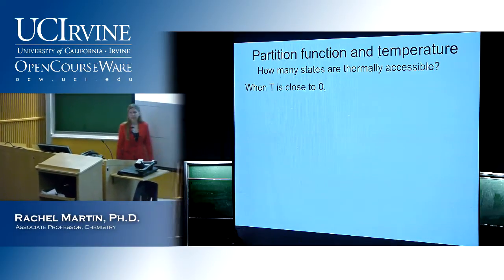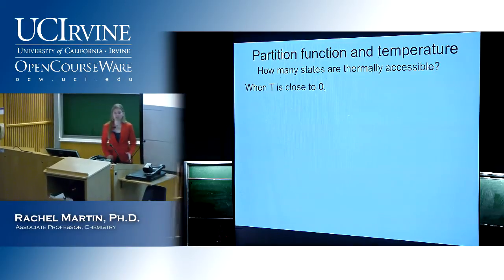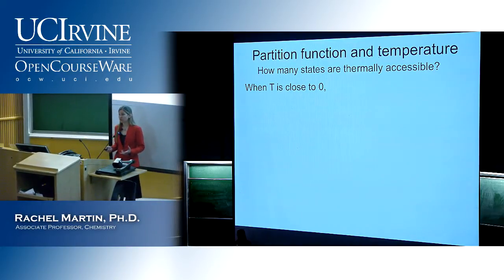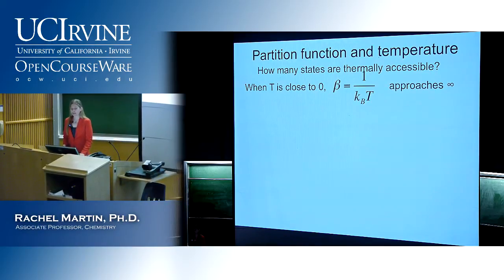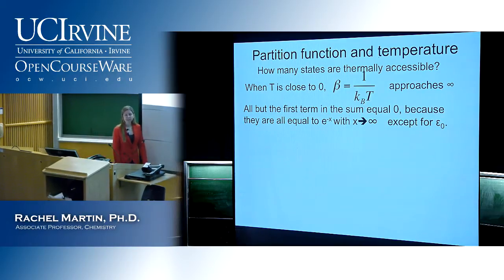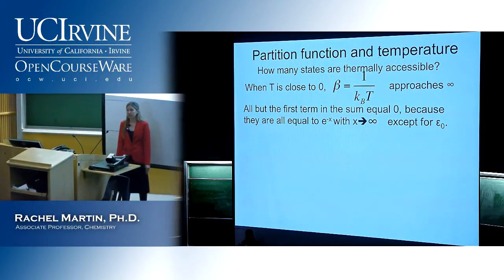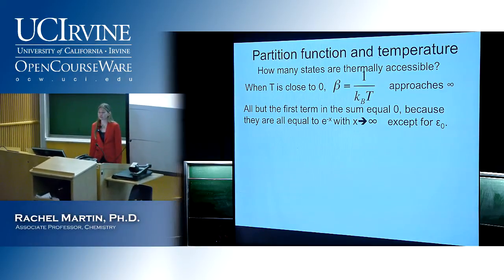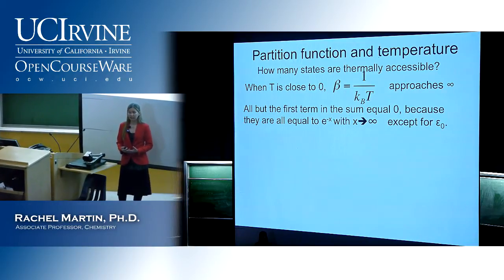Let's think about some limiting cases. If the temperature is close to zero — we cool our system almost all the way down to 0 K — beta = 1/kT approaches infinity. That tells us that everything other than the first term in the sum is going to equal zero, since they're all e^{-∞}. This gives us the really intuitive result: if we cool the system close to zero, almost everything is going to be in the ground state level.